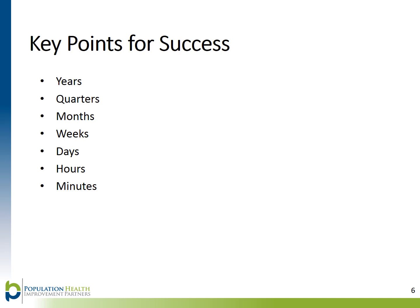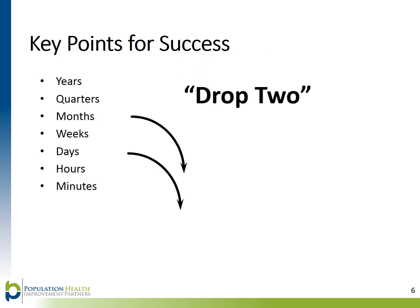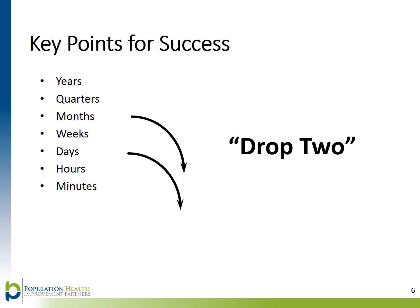One tip to help you try changes on the smallest scale possible is the scaling down, or DROP 2, principle. When you have a change and you think, let's test this change for the next month — scale down the change by 2. Let's test this change for a day. Testing on a small scale will also allow your colleagues to try the change and give feedback before it is implemented across the entire organization. This will increase buy-in and help reduce resistance to the change.